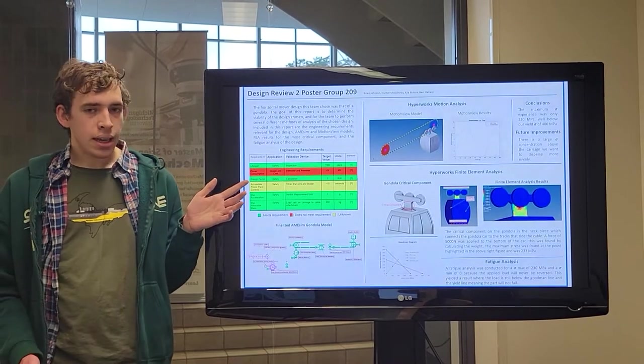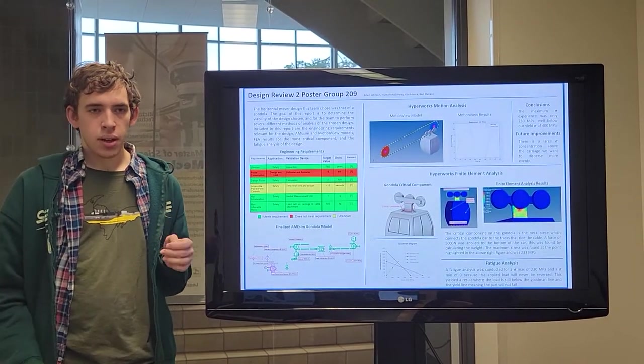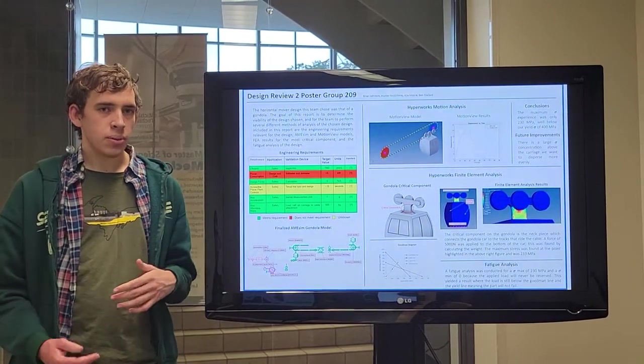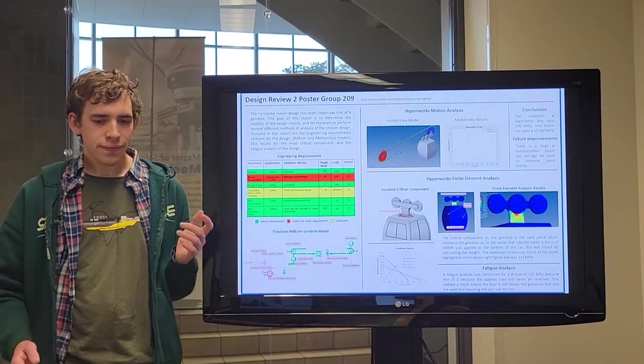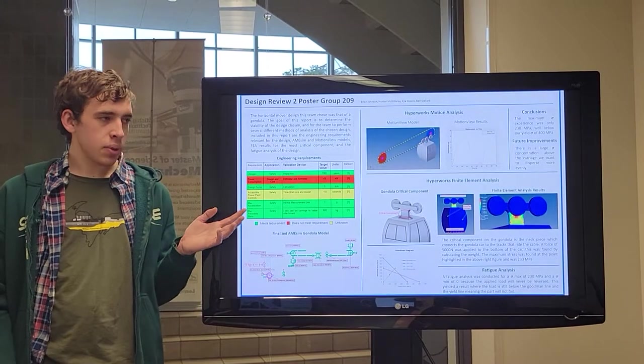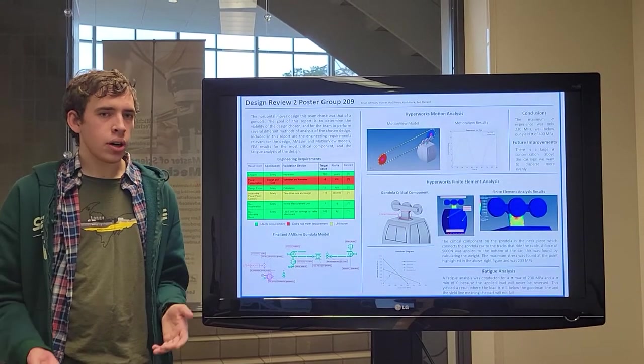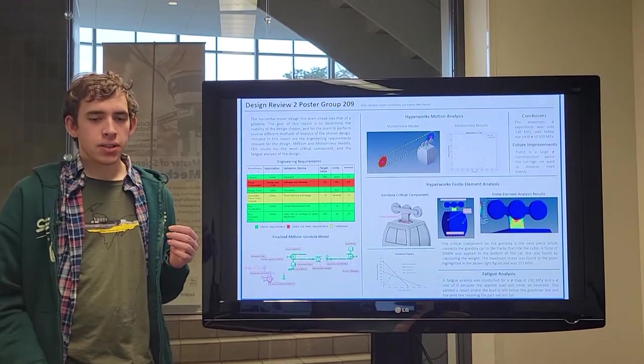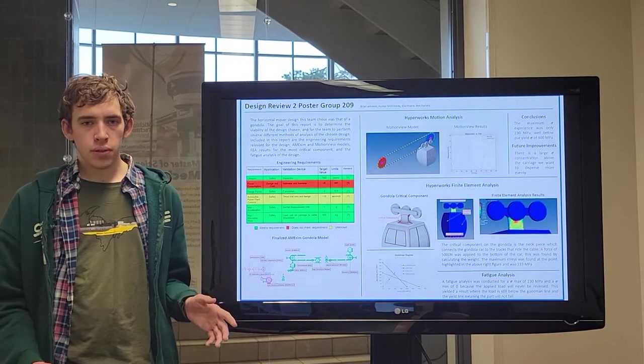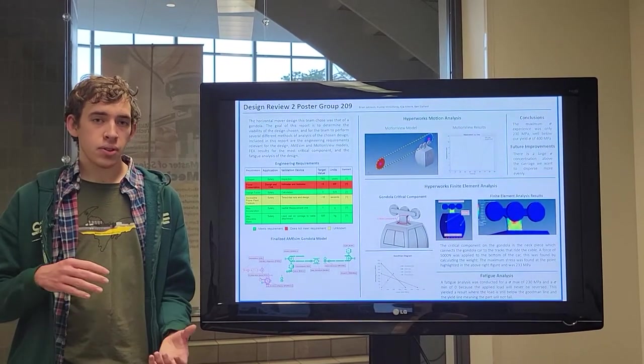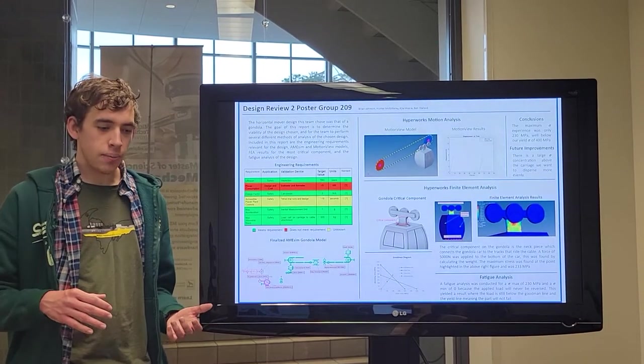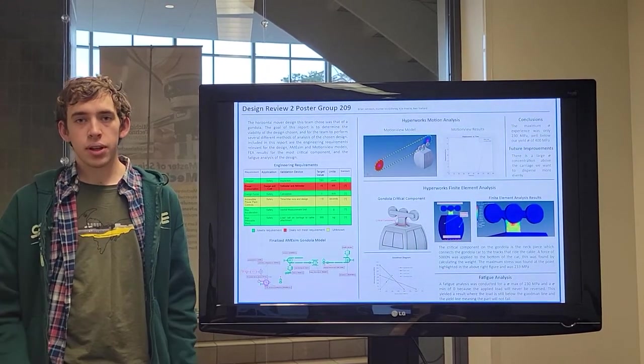We found that we were not able to meet our desired power consumption. Our AIMSIN indicated that we were using too high a power for what we'd set. And the accessibility of our controls we were also unable to verify because our simulations were more focused on the physical movement of the gondola and the stresses that it was under, as opposed to the actual control system of the gondola.